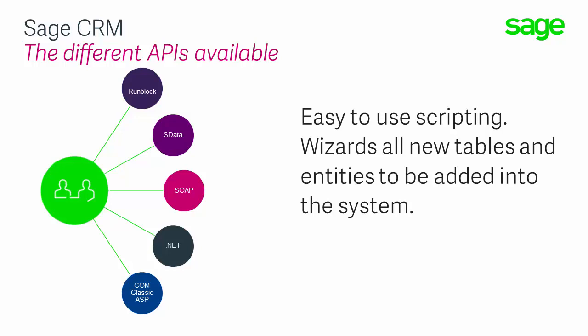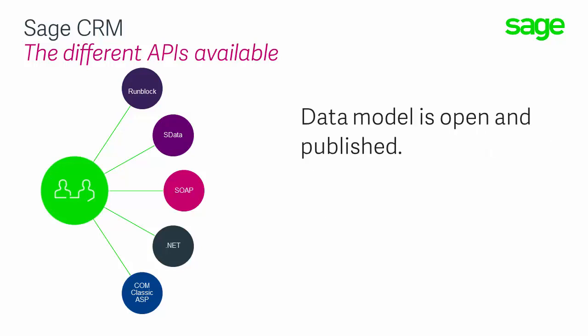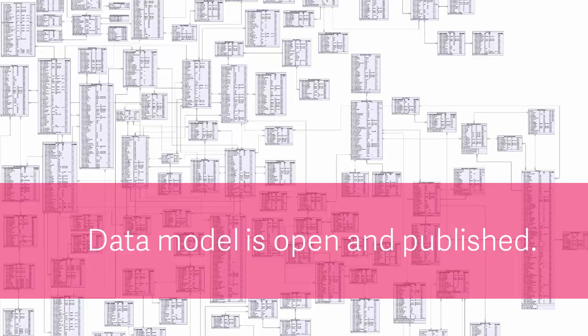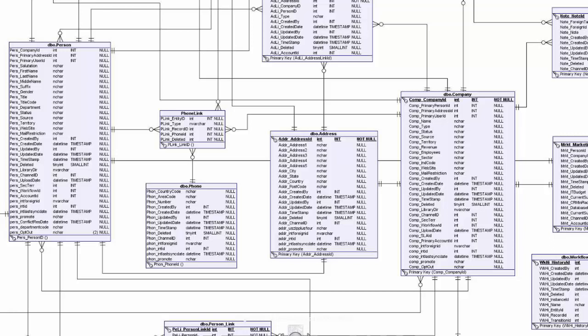We have a very powerful tool in the client-side API and a database that is very open. You can have an open data model and see within it the structures. We describe and provide resources to help you understand all of the physical changes that take place between one release and the next. You can also see the limited use that we make of triggers and stored procedures within the product.